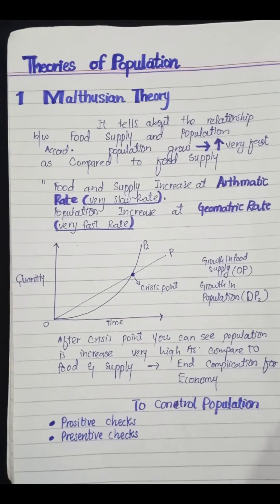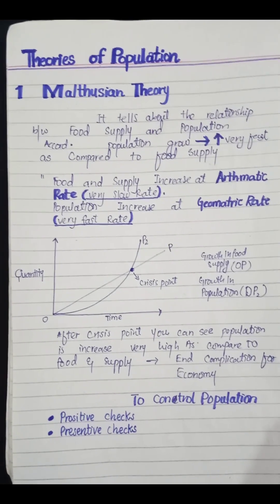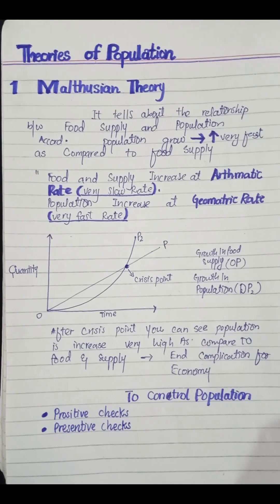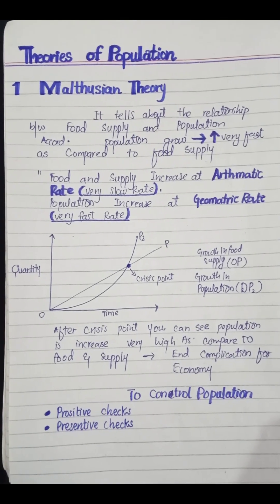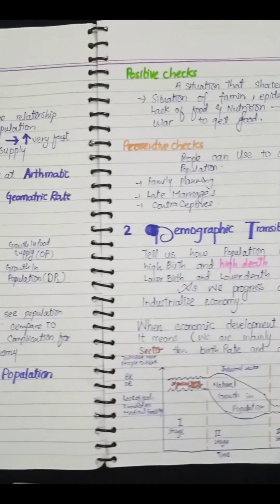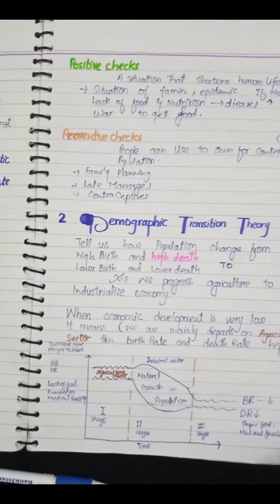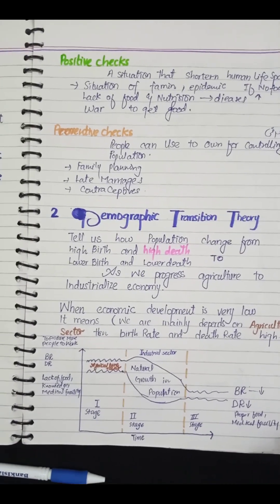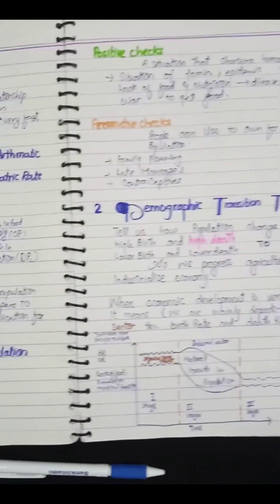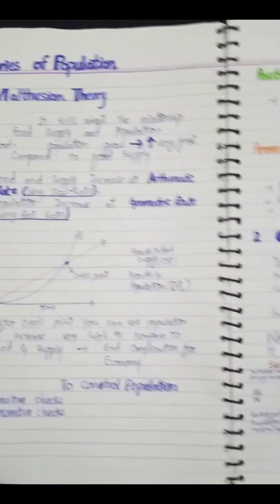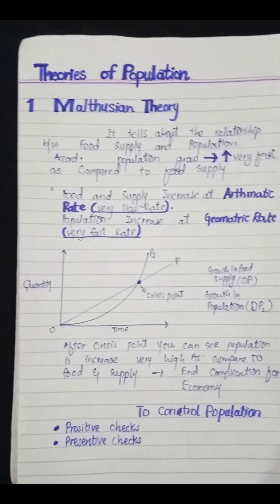Assalamualaikum, welcome to Education Go channel. Today we are talking about the theories of population, which include the Malthusian theory, the demographic transition theory, and the third one is the optimum theory of population. So without wasting any time, let's get started.